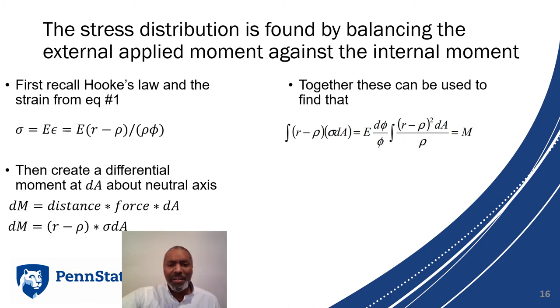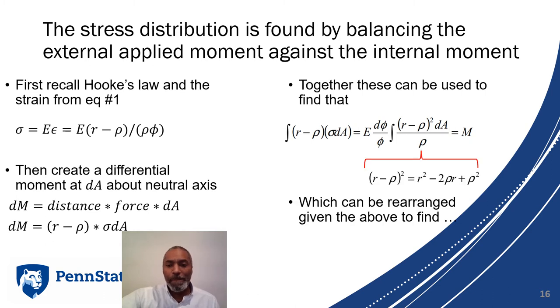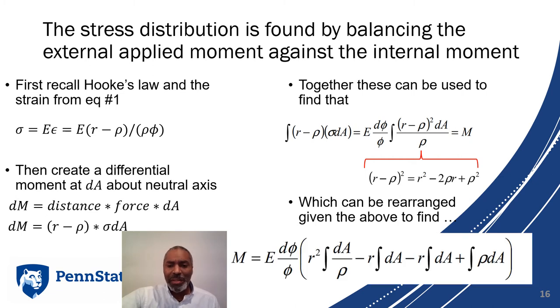We substitute our stress equation into our moment equation, and we integrate the moment with respect to A. We're left with some interesting terms in our integral, namely r minus rho squared dA over rho. We can expand that to get a polynomial, and we get essentially four terms inside parentheses.